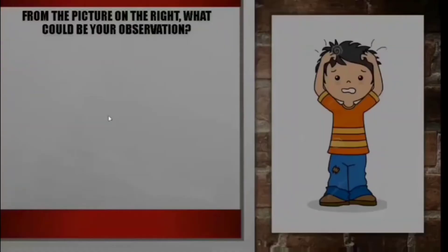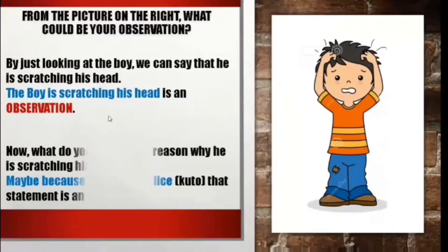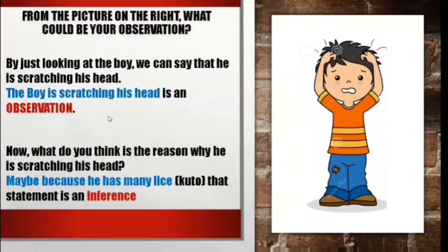For example, look at the picture on the right. What could be your observation? By just looking at the picture of the boy, we can say that he is scratching his head. The observation will be: the boy is scratching his head. To practice inferring, think of the possible reason why the boy is scratching his head. You can make a statement such as: maybe because he has many lice, or a kuto.